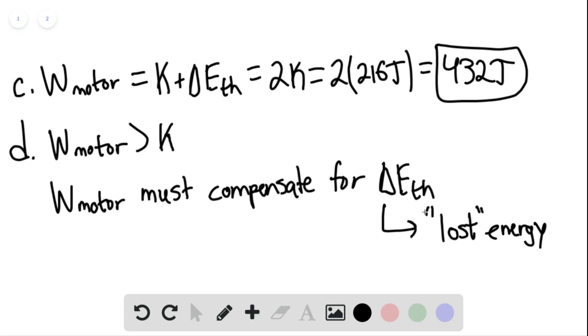Again, 'lost' is in quotation marks because energy is not lost—it's always just transferred from one form to another. But here, the form that it's being transferred into is not kinetic, which means that some of the work done by the motor is going to be lost, and it must compensate for that lost energy.